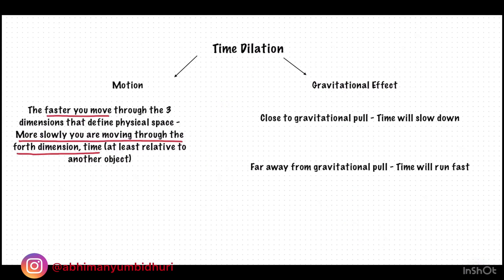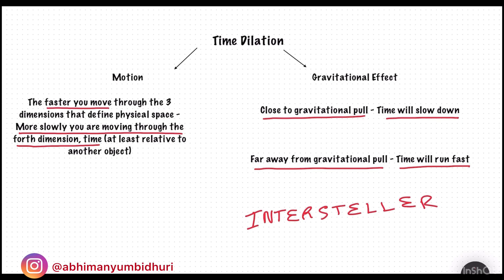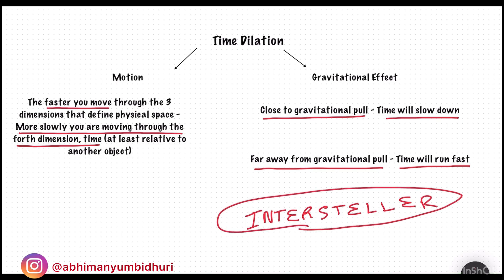Now let's see how gravitational effect alters time. In simple words, if you are close to a gravitational pull, time will slow down, and if you are far away from the gravitational pull, time will run fast. This effect was also shown in the movie Interstellar, where staying one hour close to a black hole corresponded to around eight years on Earth.